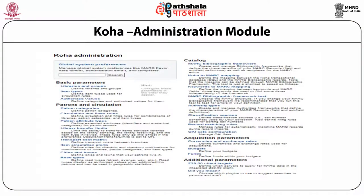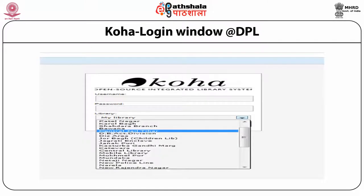Finally, Koha sets parameters for acquisition including currencies and exchange rates, budgets, and funds. It also has important additional parameters for Z39.50 client targets. The screen shows the administration module of Koha displaying basic parameters, parameters for patrons and circulation, catalog, acquisition, and additional features. The screen also shows the login window of Delhi Public Library showing all the member libraries.